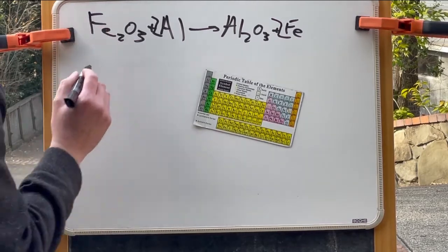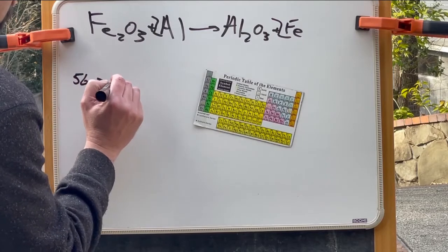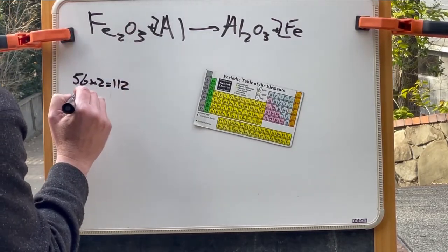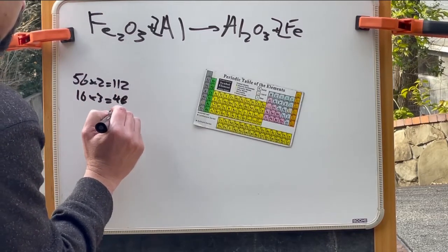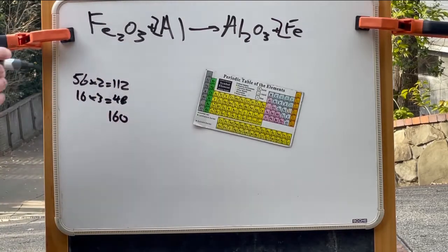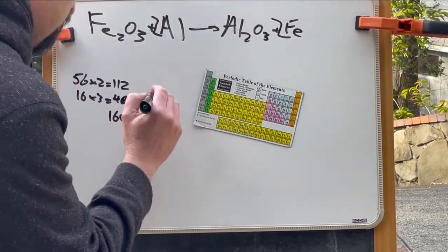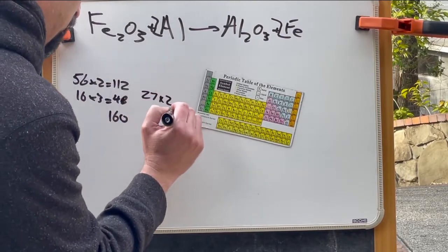So the atomic weight of iron is 56 times 2 is 112. Atomic weight of oxygen is 16 times 3 is 48, or 160.